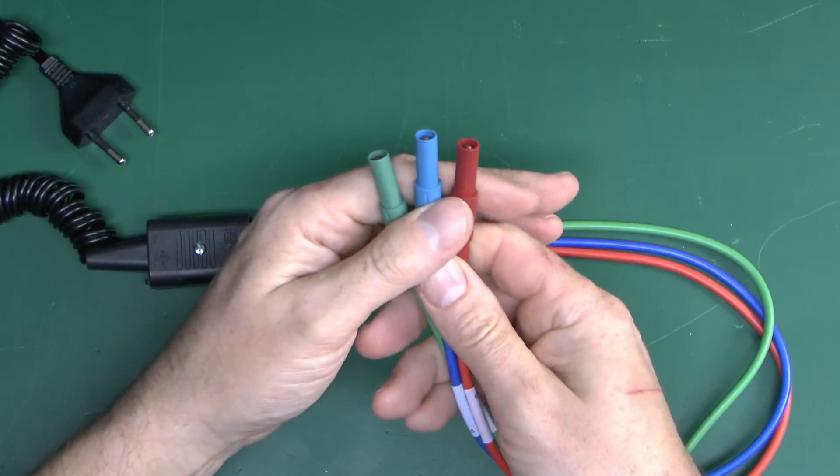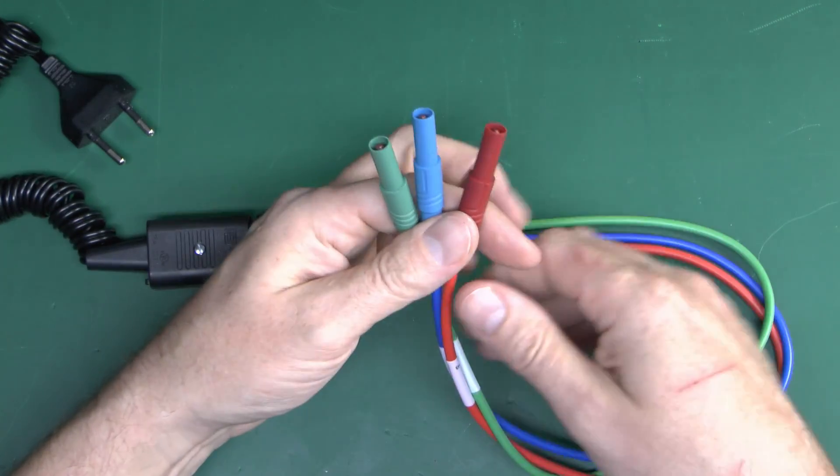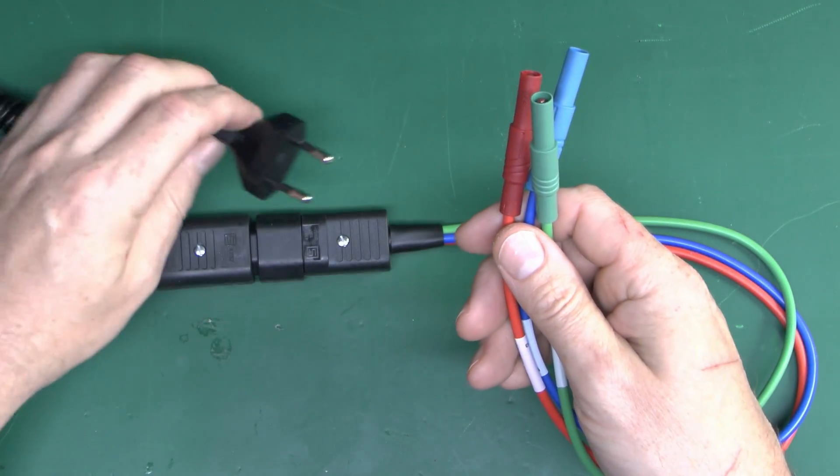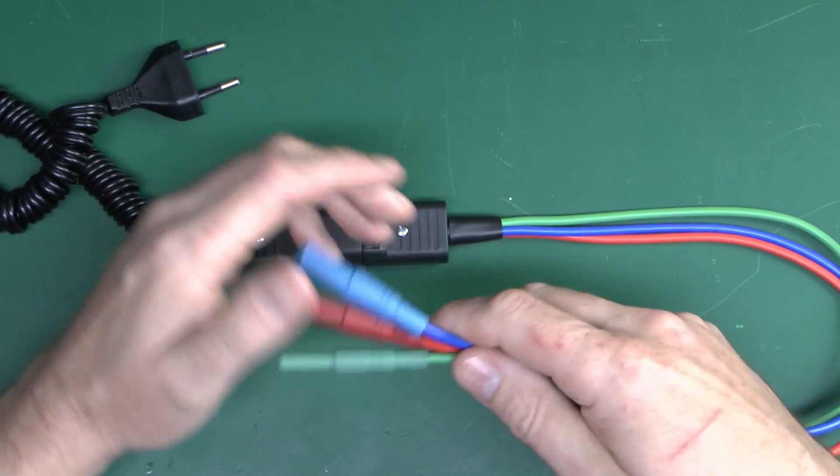And then you can obviously check things like the voltage, loop impedance test, and whatever else you want to do there. Obviously with a shaver socket it's going to be mainly just the voltage, but other things can be attached to this as we've seen.